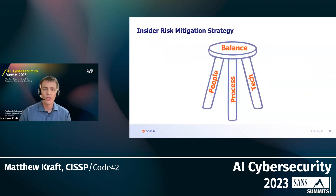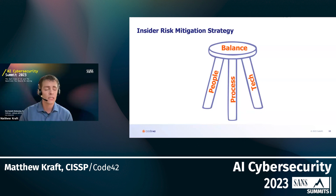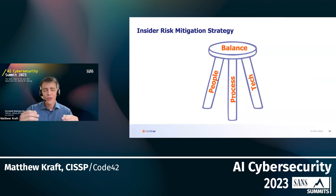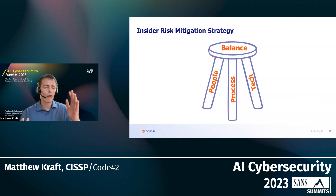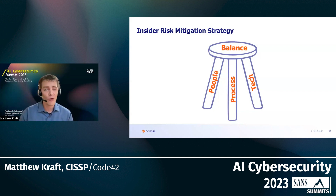When thinking about enterprise risk management and insider risk mitigation for generative AI tool use, it's important to look across three elements: people, process, and technology. I like the analogy of a three-legged stool. If one leg becomes longer or shorter, the stool is out of balance. While it may never be perfect, you want an approximate balance across people, process, and technology.